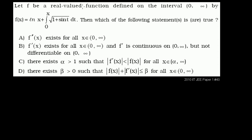Let f be a real valued function defined on the interval from 0 to infinity, not including 0. And f is defined as the natural log of x plus the definite integral from 0 to x of the square root of 1 plus sine of t, dt. Then which of the following statements are true? More than one of these might be true, so let's figure them out.